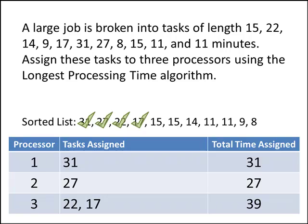Now we've got a task that's 15 minutes long. Processor two, with its 27 minutes, is the processor with the least amount of time assigned, so that's where we'll put that 15. We've got another 15-minute task, and now processor one is the processor with the least amount of time assigned, so that's where we'll put our next 15. Now we've got a task that's 14 minutes long, and we're back to processor three — with 39 minutes it's still the lowest — so processor three gets that 14-minute task.